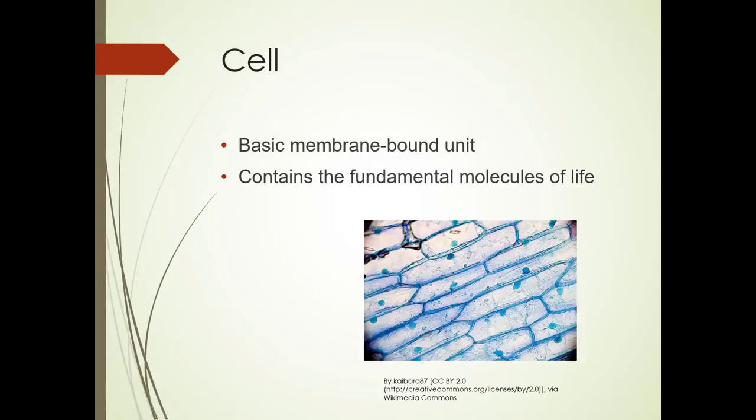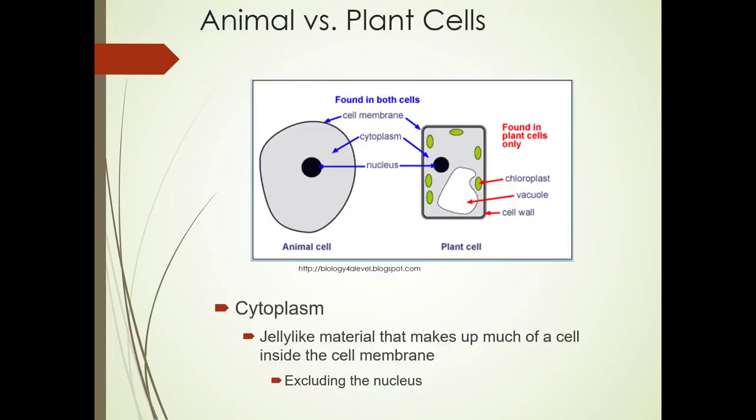A cell is a basic membrane-bound unit that contains the fundamental molecules of life. While there are similarities between animal and plant cells, there are definitely some differences. You will find cell membranes, cytoplasm, and a nucleus in both types of cells, but you won't find a chloroplast, vacuole, or cell wall in an animal cell.